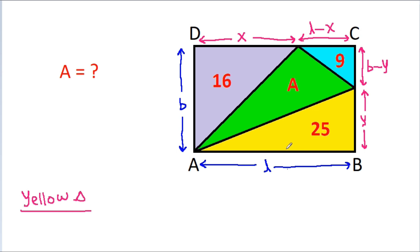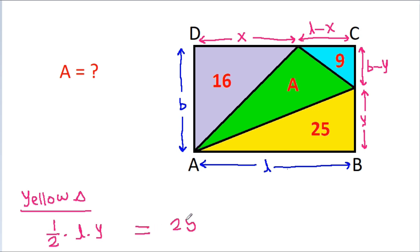If we consider the yellow triangle, its area will be half times L times Y, which equals 25. So from here we get L times Y is equal to 50. Let's call this equation 1.